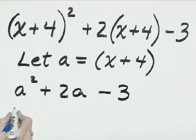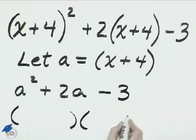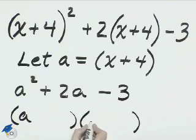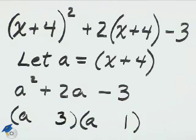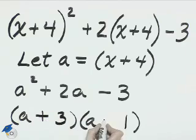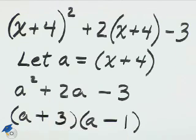This can be factored into two binomials, a and a for the first terms. The factors of 3 are 3 and 1. 3 is positive and 1 is negative, so that the outer and the inner will be positive 2a.